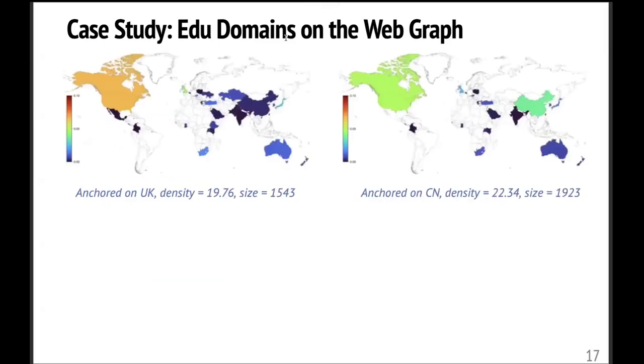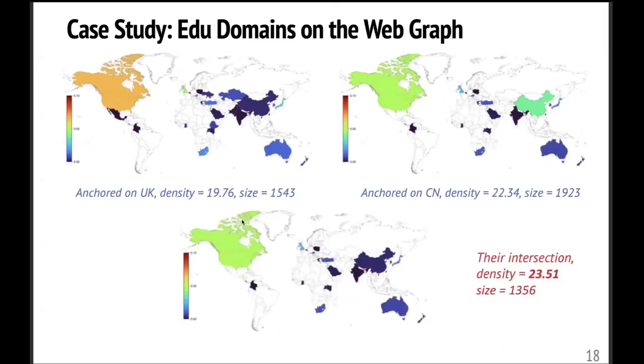But our tool enables you to dig out more diverse structures. So here we display, using heat maps, the anchored densest subhypergraphs anchored on UK domains and Chinese domains. And you can see we find different dense sets. And more interestingly, if you intersect these two dense sets, you can actually find a denser set. So this showcases that we can combine the results of different anchored densest subgraphs to dig out a lot of dense structures.